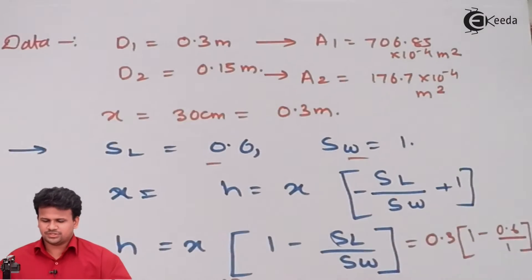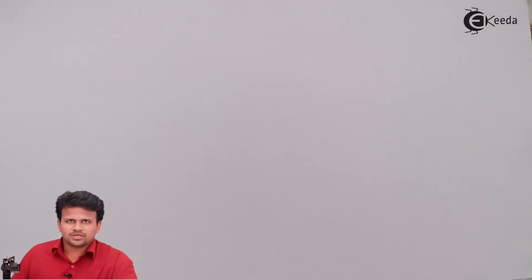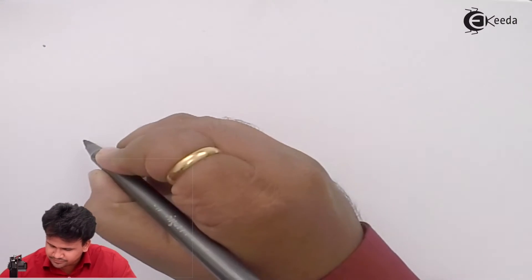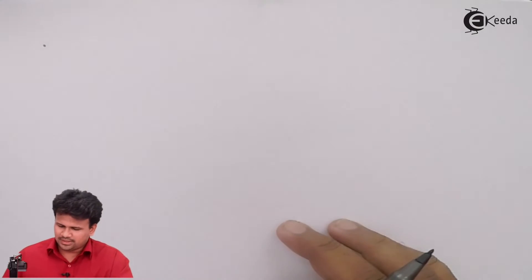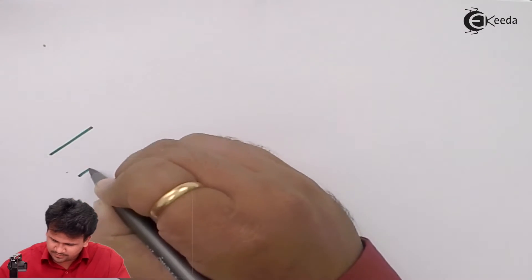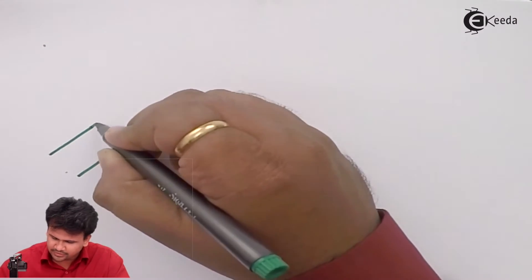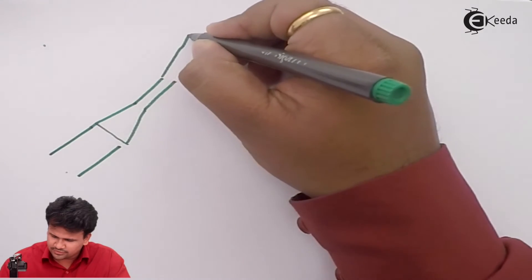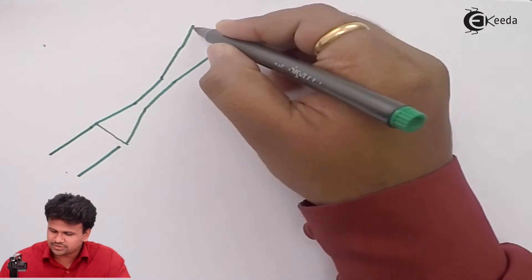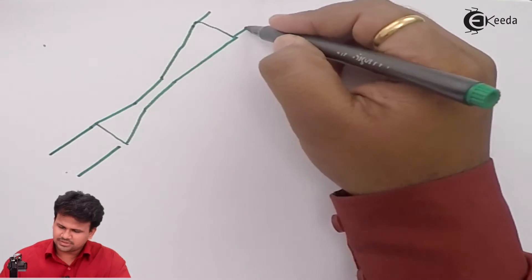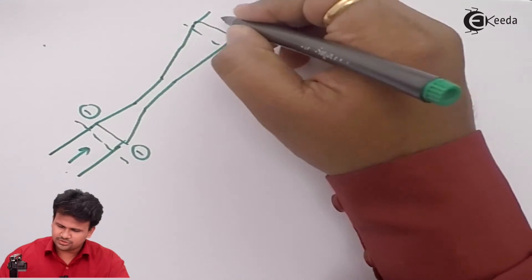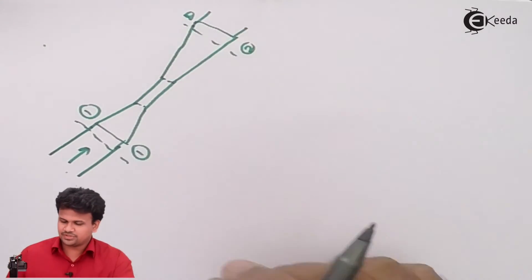We have calculated H. Now, to calculate discharge, we need to apply Bernoulli's equation. The Venturimeter is inclined, so let us draw an inclined Venturimeter: the pipe diameter connects to a converging cone, then we have the throat, followed by a diverging cone with a very small slope, and then the pipe continues. Section 1-1 is at the inlet and section 2-2 is at the throat.